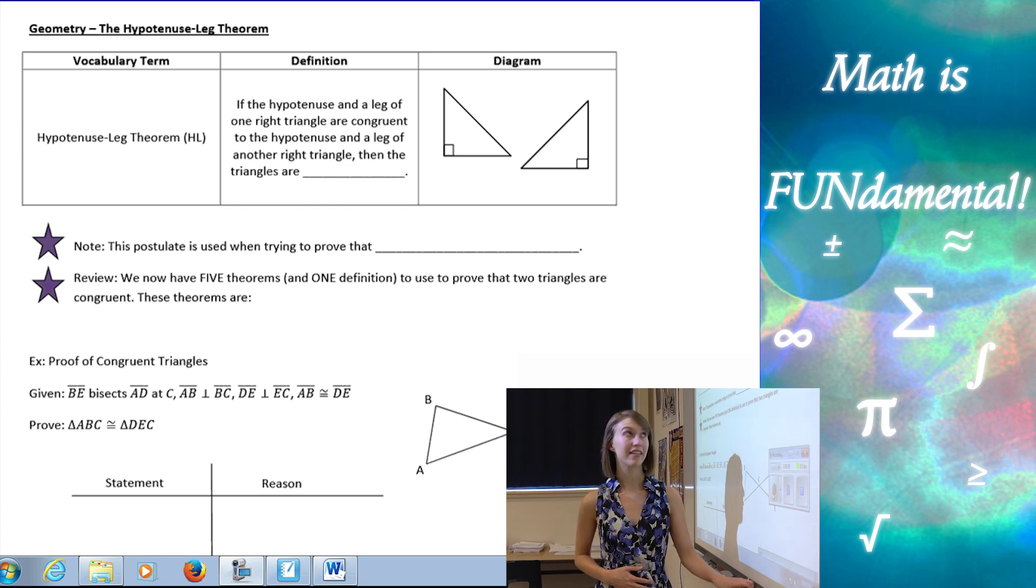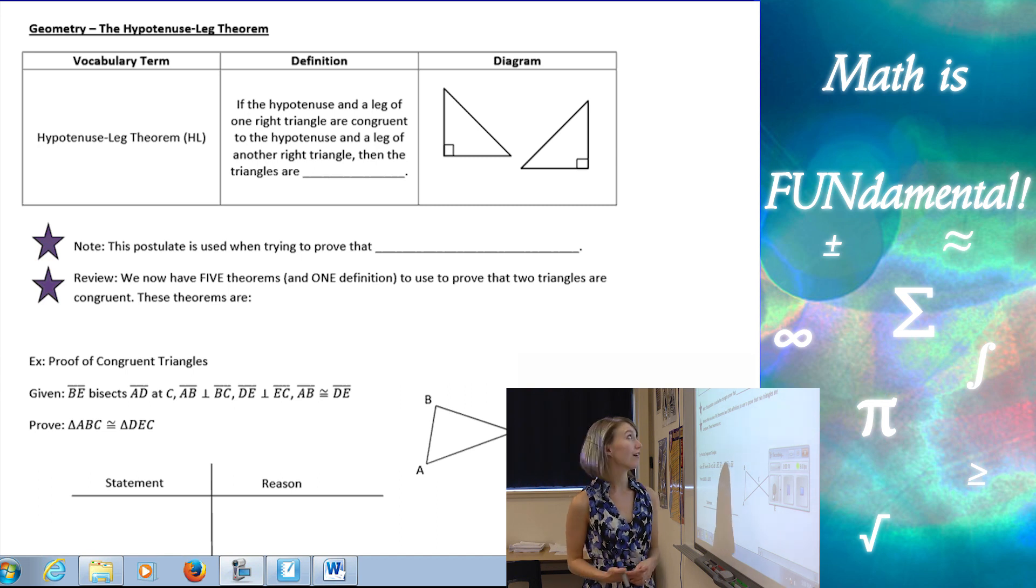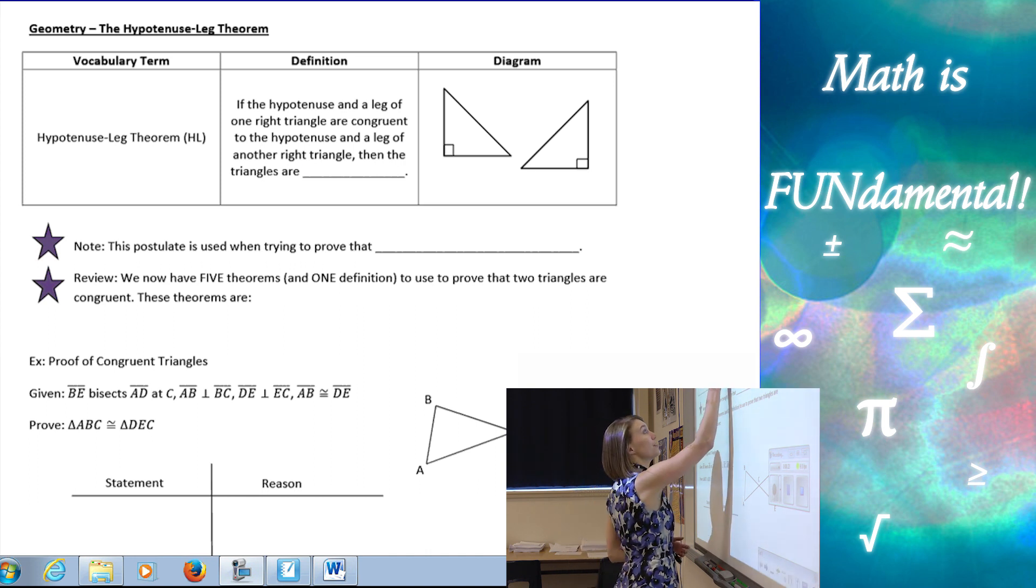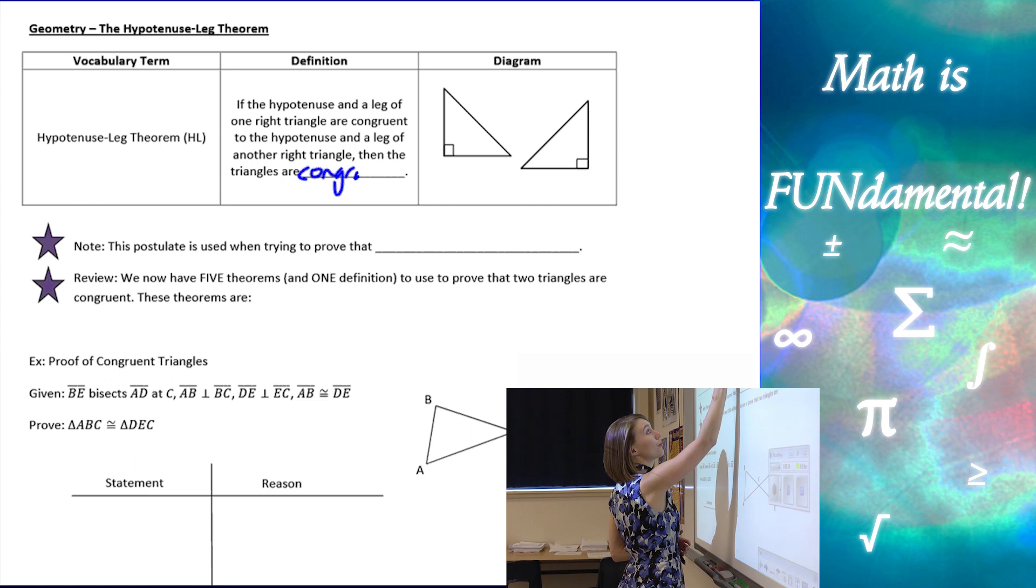The hypotenuse leg theorem is a triangle congruent theorem that states if the hypotenuse and leg of a right triangle are congruent to the hypotenuse and corresponding leg of another right triangle, then the two triangles are congruent.